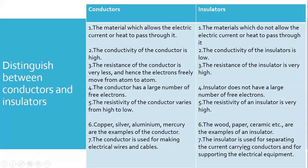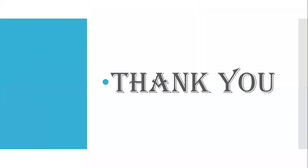Conductors are used for making electric wires and cables, while insulators are used for separating current-carrying conductors and supporting electrical equipment. For example, handles of cooking utensils are made of insulators because they are poor conductors of heat. Thank you students — I hope you understood Ohm's law, the factors affecting resistance, and the difference between conductors and insulators.